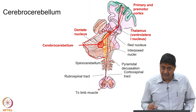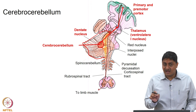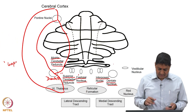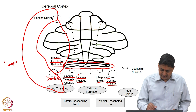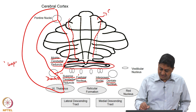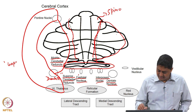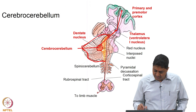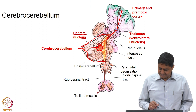The cerebrocerebellum comprises the most lateral parts of the cerebellum. The more medial parts — the vermis and the paravermal area or intermediate zone — constitute the spinocerebellum, discussed in the previous class. The flocculonodular lobe constitutes the vestibulocerebellum. So the more medial region is spinocerebellum and the more lateral region is cerebrocerebellum, whose deep cerebellar nucleus is the dentate nucleus.